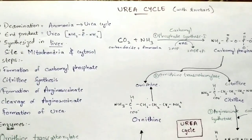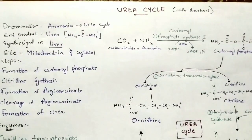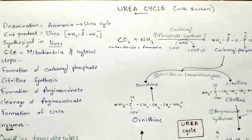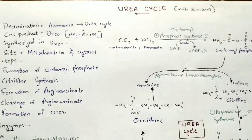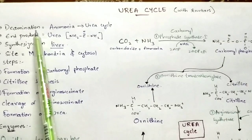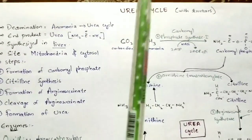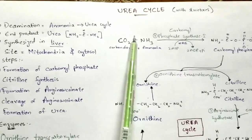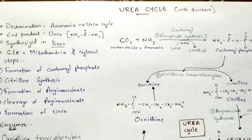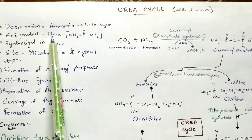If you don't know about deamination, I have already explained it in my previous videos — the link will be given in the description box. The ammonia liberated from the deamination process will be used in this urea cycle, and because of this ammonia the urea cycle gets originated.